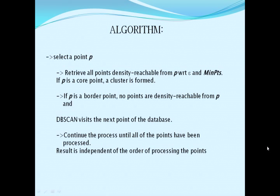Algorithm of DBSCAN: First, select a point P. Retrieve all points density-reachable from P with respect to epsilon and min points. Epsilon is the distance and min points is the minimum support to form a cluster. If P is a core point, a cluster is formed. If P is a border point, no points are density-reachable from P, and DBSCAN visits the next point in the database. Continue this process until all points have been processed. The result is independent of the order in which the points are processed.